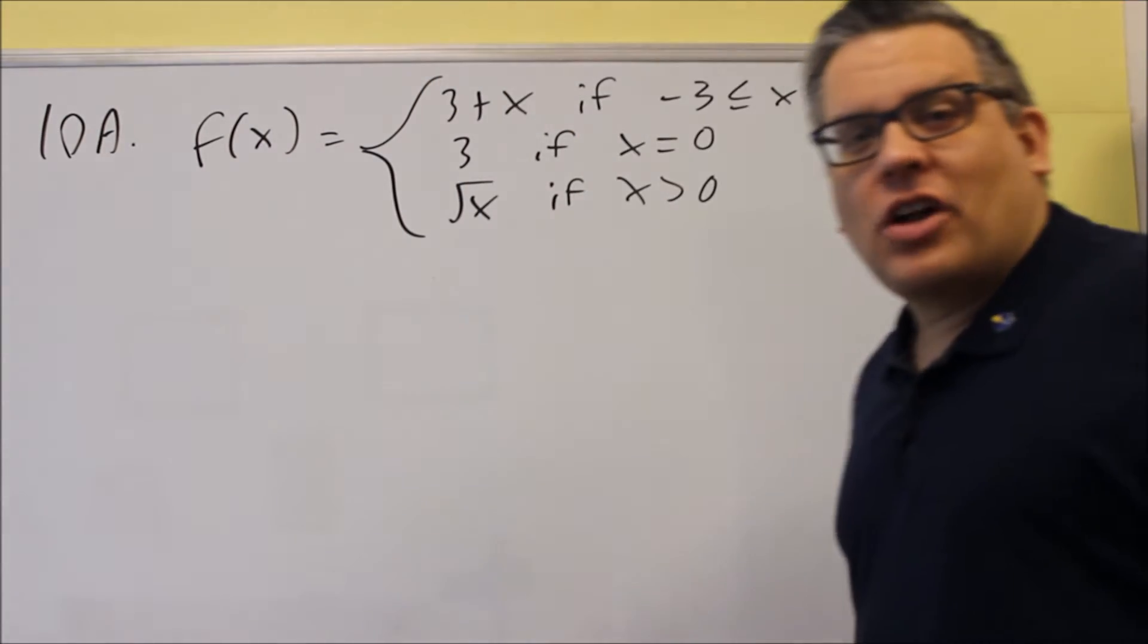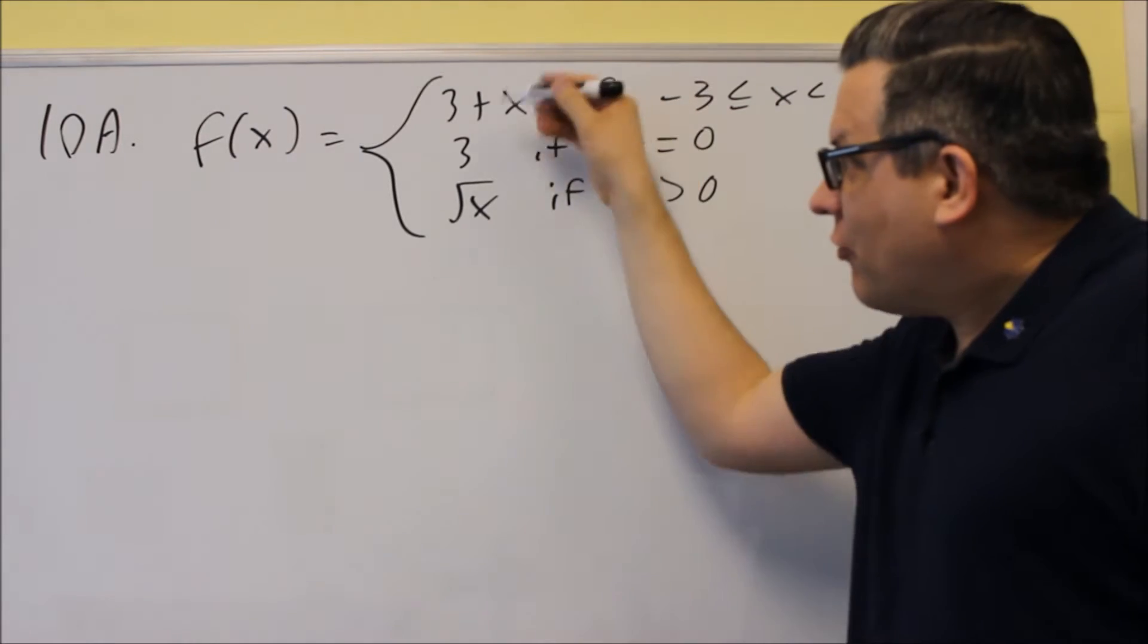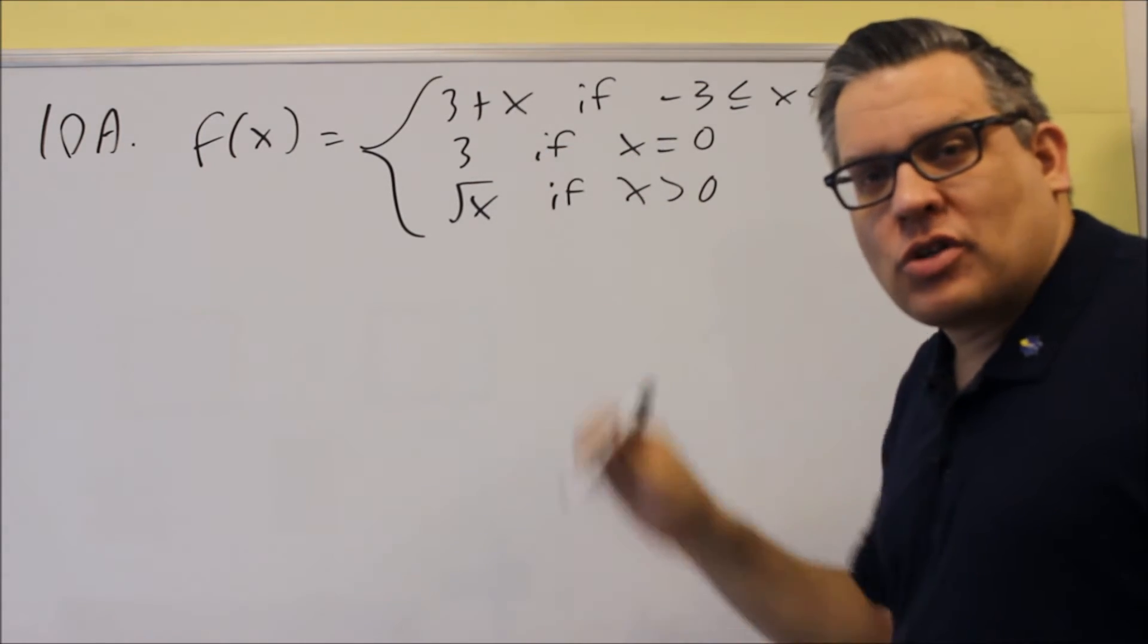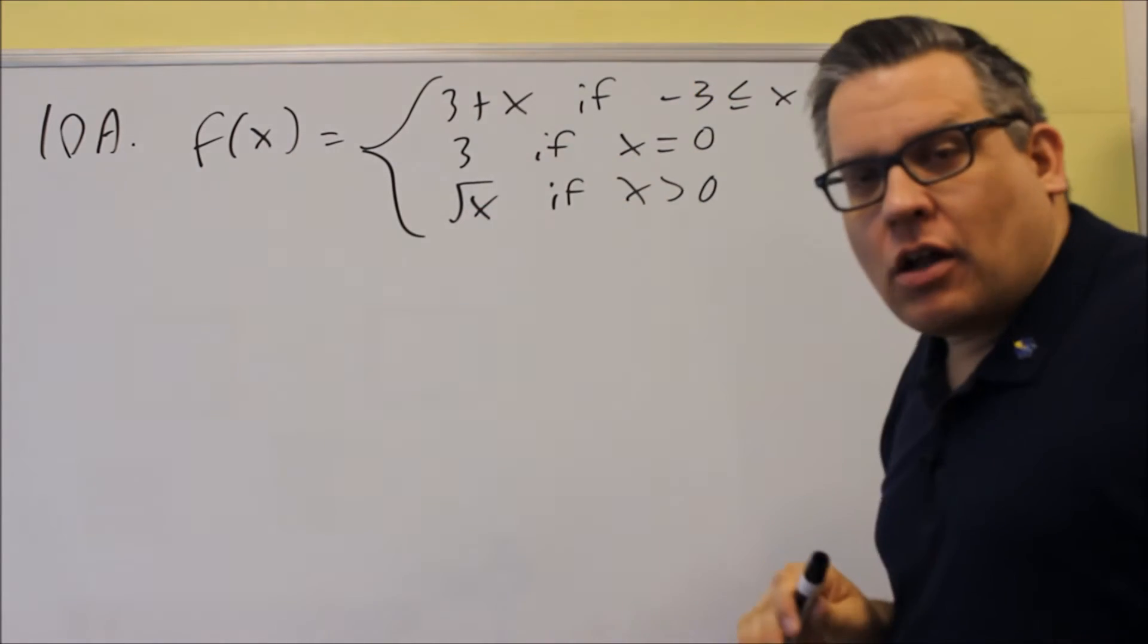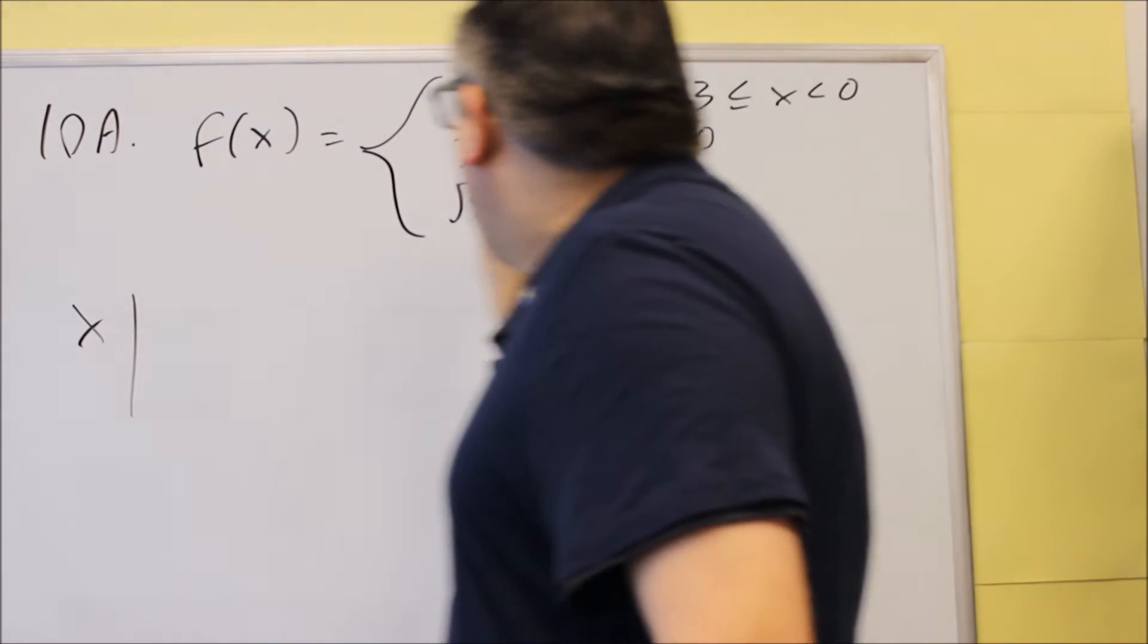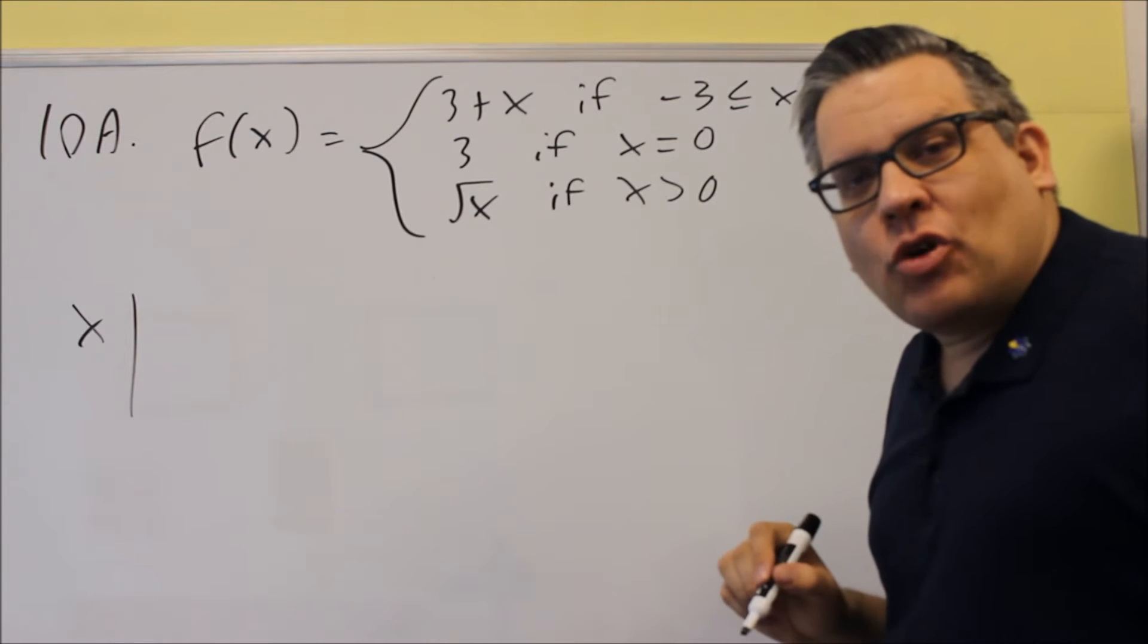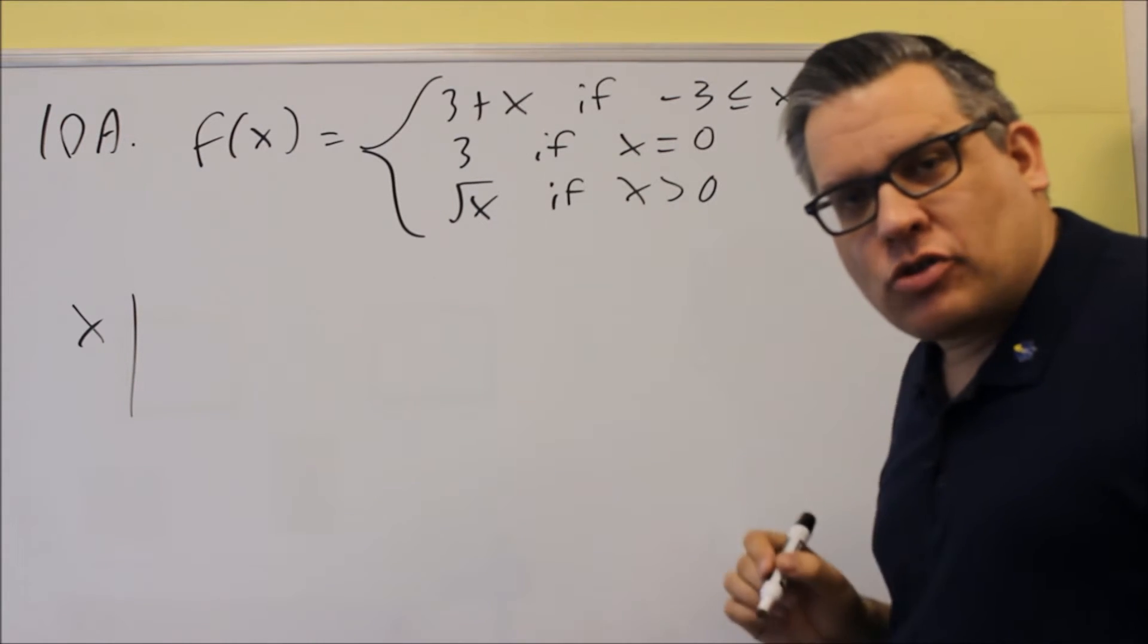Now for the graph on these, what I recommend doing is making tables for each of the different functions that you have. Well, this one, the second one, we don't need to make a table because all that is is plotting a 0, 3. So we'll do that last. Let's work with the first one and the last one. Now, if you have x raised to the first power, then you have a line. And so for lines, you only have to look at two points. So two points will determine a line.